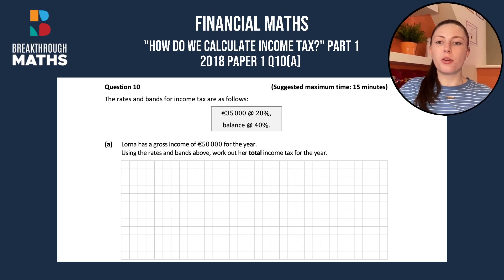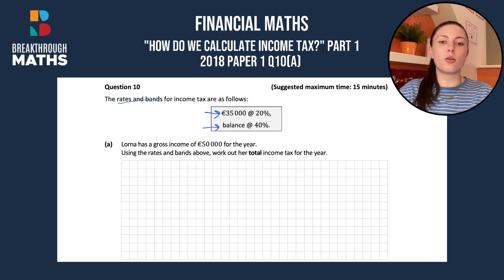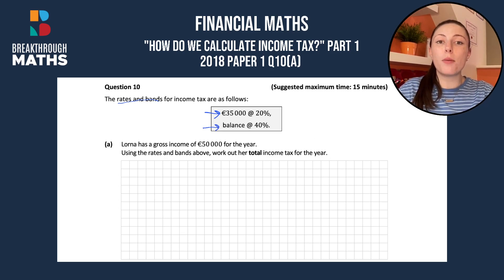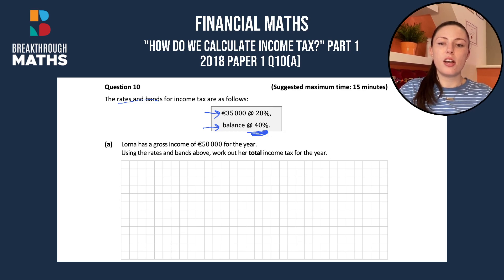In this question we're told the rate and bands for income tax are as follows: $35,000 is going to be at 20% and any balance is going to be at 40%. What that means is any income above $35,000 is going to be taxed at 40%. We're told Lorna has a gross income of $50,000 for the year.